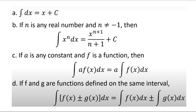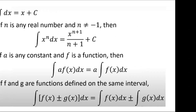Rule (d): if f and g are functions defined on the same interval, ∫[f(x) ± g(x)] dx = ∫f(x) dx ± ∫g(x) dx. These are the rules we will use. When it comes to algebraic functions, we often use rule (c) for constants, and sometimes a combination of several rules.